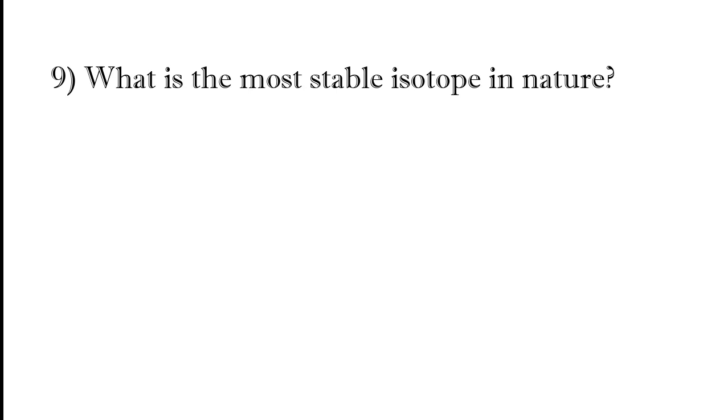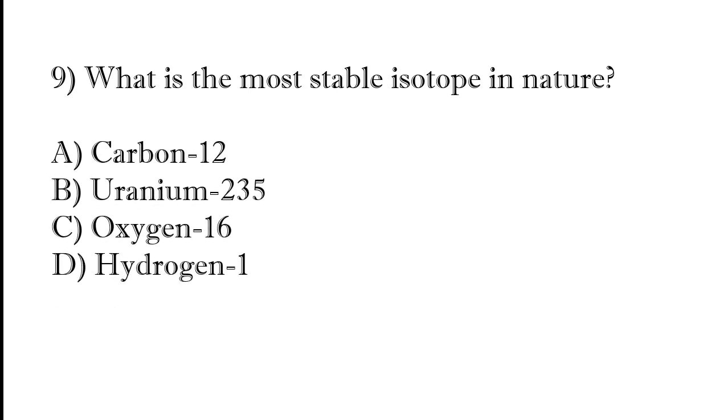What is the most stable isotope in nature? Carbon-12, uranium-235, oxygen-16, or hydrogen-1. The correct answer is option A, carbon-12.